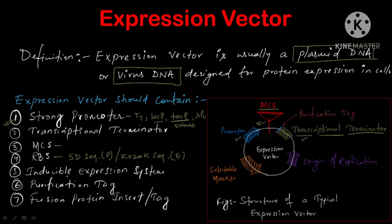Next, we need to have an inducible expression system. This is required because many times the protein expressed either in too little or too high an amount may be toxic for the cell. So we need to express the protein in an optimum amount. For that, we need an inducible expression system so that we can control the expression. Normally we use IPTG if we use the lac promoter or the tac promoter, as IPTG can serve as the inducer.